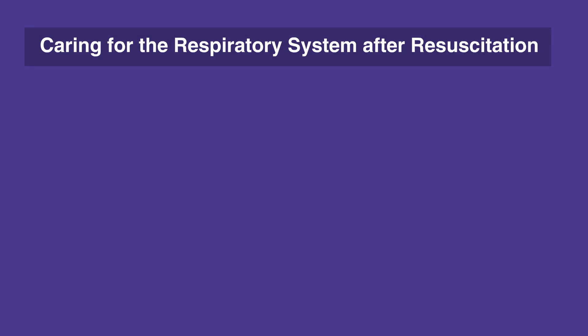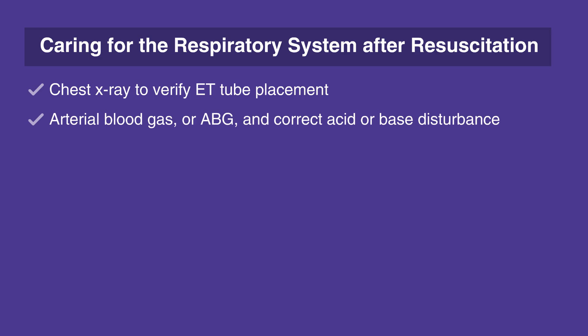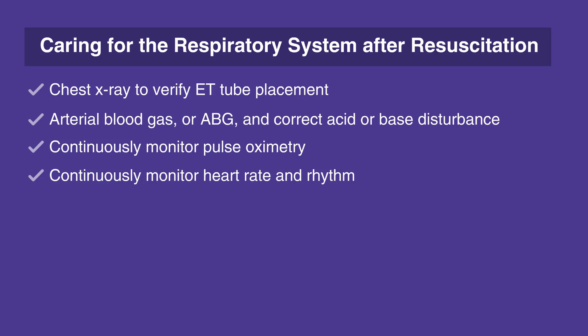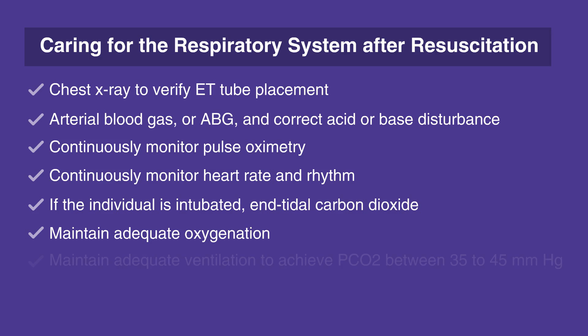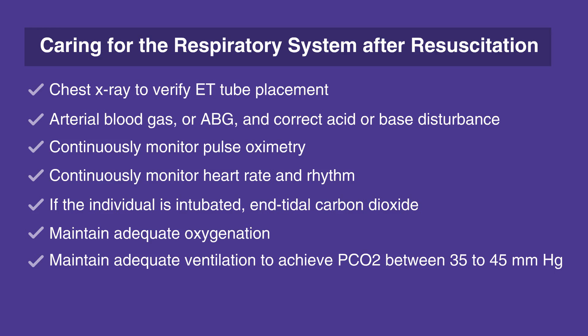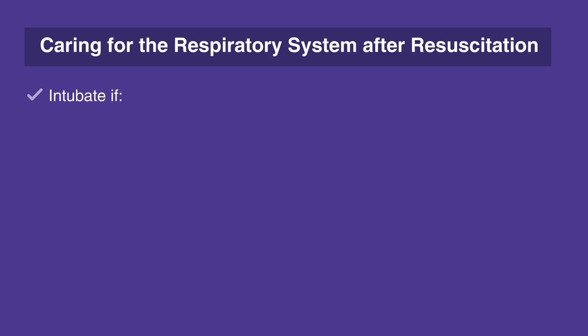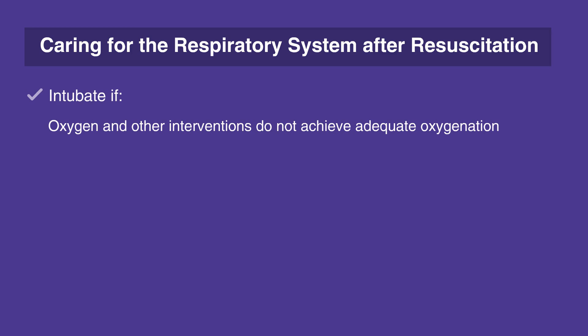When caring for the respiratory system after resuscitation, follow this checklist: Chest X-ray to verify ETT placement. Arterial blood gas, or ABG, and correct acid-base disturbance. Continuously monitor pulse oximetry. Continuously monitor heart rate and rhythm. If the individual is intubated, monitor end-tidal carbon dioxide. Maintain adequate oxygenation, that is, saturation between 94 and 99 percent. Maintain adequate ventilation to achieve PCO2 between 35 to 45 millimeters of mercury, unless otherwise indicated. Intubate if oxygen and other interventions do not achieve adequate oxygenation.